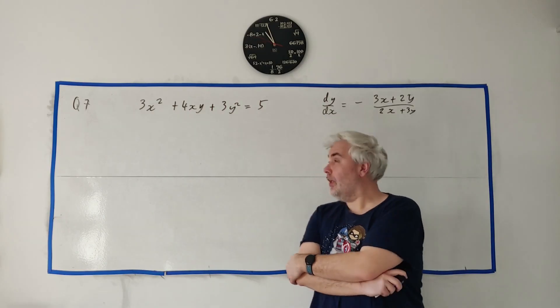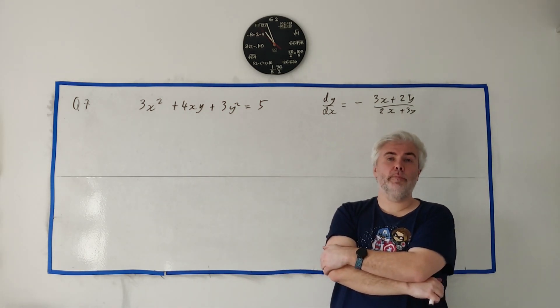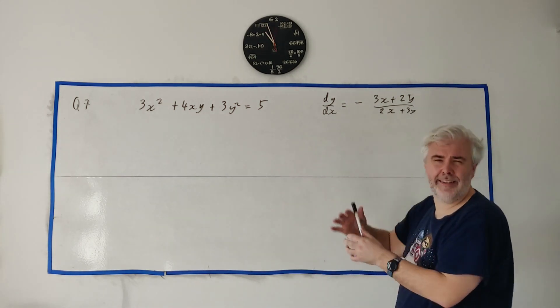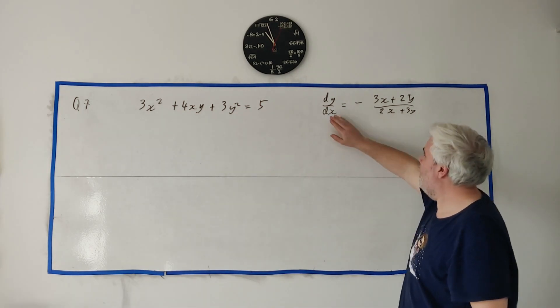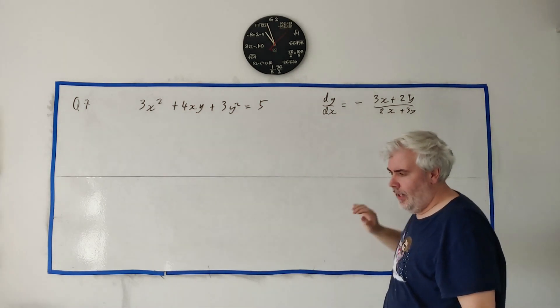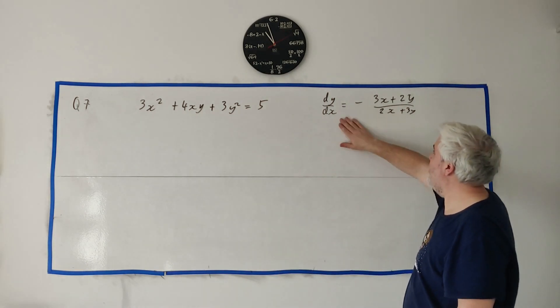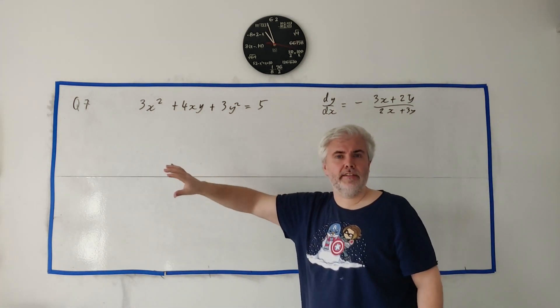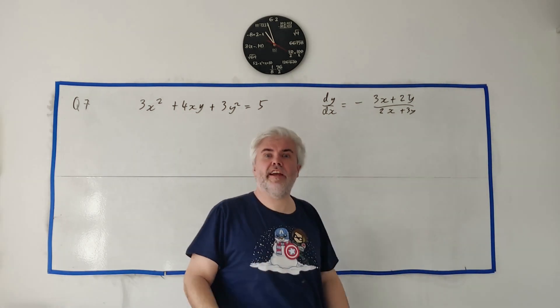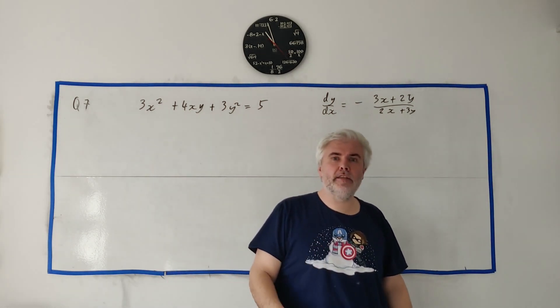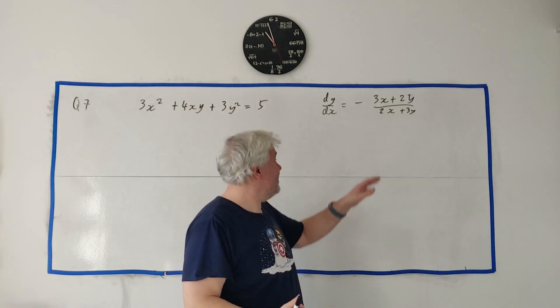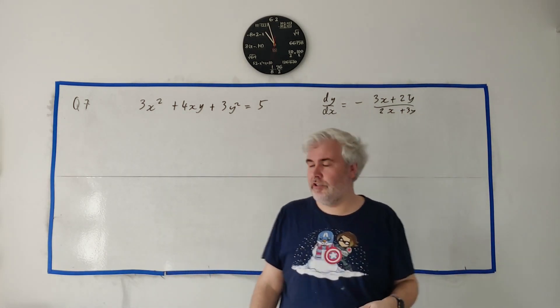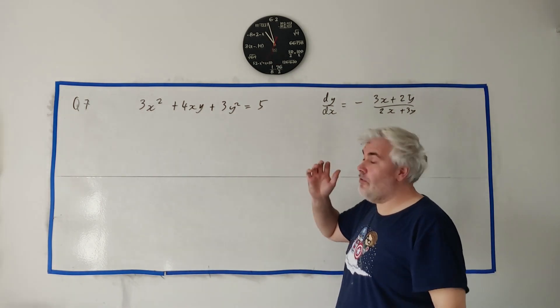In question 7, we're given this fairly complex equation here, and we're basically asked to differentiate or to find dy/dx more importantly. They phrase the question as this: show that dy/dx is equal to this. Now, whenever you see that in an exam, show that this equals this, basically what they're asking you is find dy/dx. They want us to find dy/dx, but they're giving us the answer just so we can check our answer.